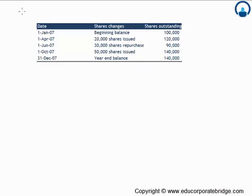Let us look at another example to calculate the weighted average number of shares. Here is the share profile and the number of shares actually changed across the years. On January 1st, 2007, the beginning balance was 100,000. After three months, on April 1st, another 20,000 shares were issued, so there was an increase of 20,000 here.